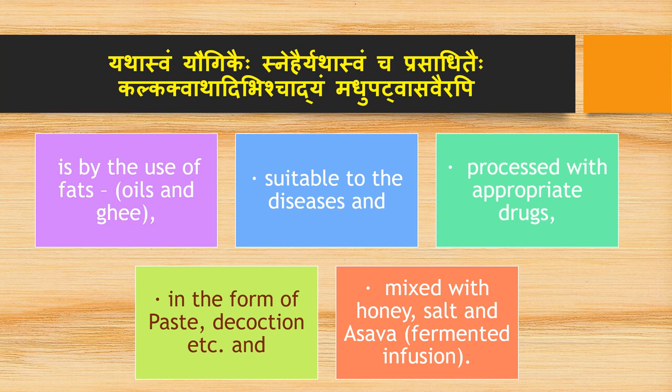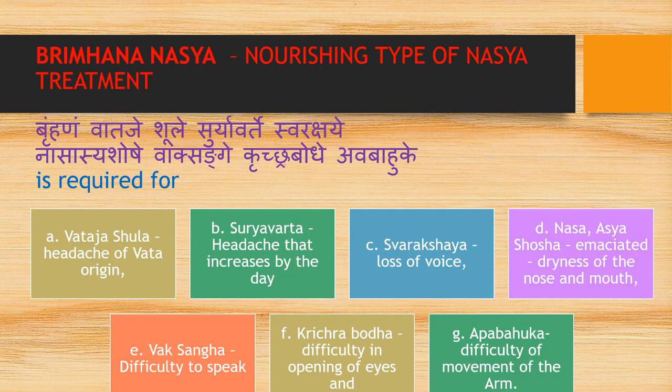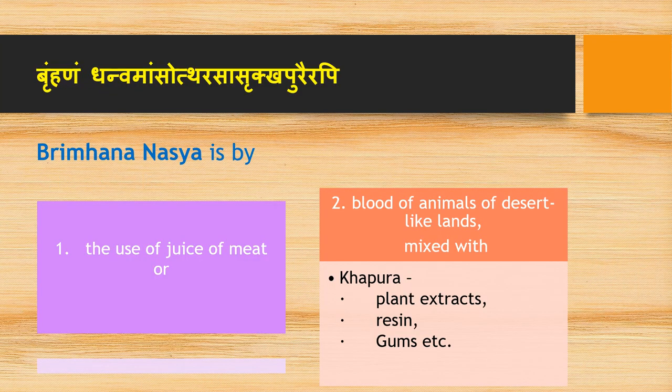The preparation is also mixed with honey, salt, and asava (fermented infusion). Brumhanam Nasya, the nourishing type, is required for Vadaja Shula (headache of Vata origin), Suryavarta (headache that increases by day), Swarakshaya (loss of voice), Nasa Asya Shoshaya (imaciated dryness of nose and mouth), and Vaksanga (difficulty to speak).